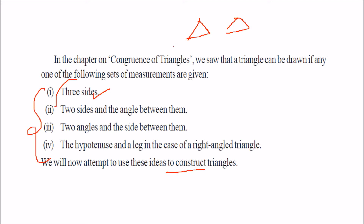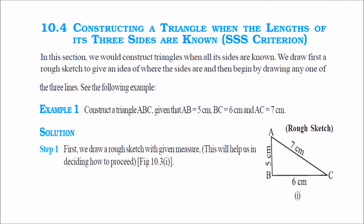We are not making congruence problems, but constructing triangles using these criteria. First, construct a triangle with three sides given. For example, construct triangle ABC where AB = 5, BC = 6, and AC = 7. Please make a rough sketch first — it will be much easier. We are going to make line BC of length 6, then from B take radius 5 and cut an arc, and from C take radius 7 and cut an arc.